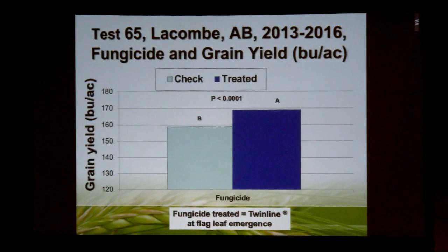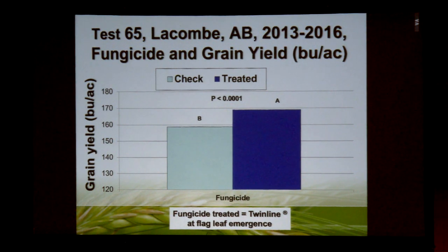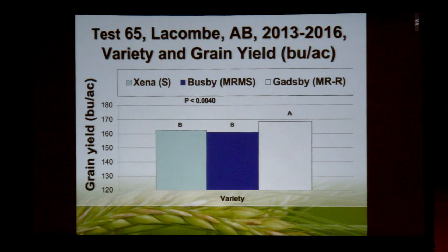What about yield? We didn't see a significant interaction between variety and fungicide because we did see some fungicide response even with resistant varieties due to other leaf diseases that were present. With fungicide we could improve yields by about 10 bushels per acre over that 2013 to 2016 period. We also saw the benefit of disease resistance, especially where there was a very high level of resistance as with Gatsby, giving a significant yield increase.